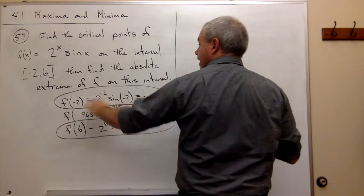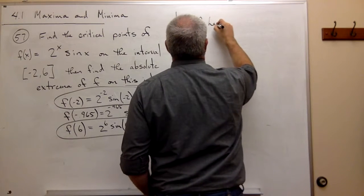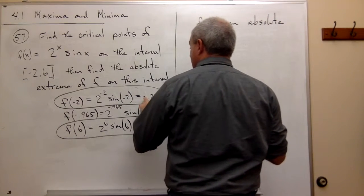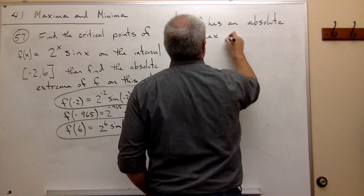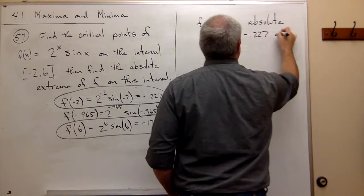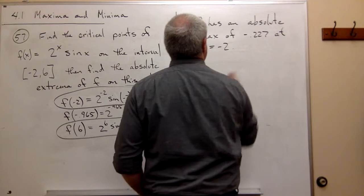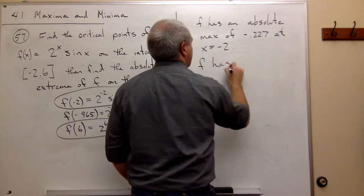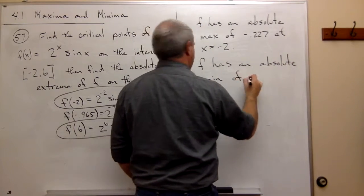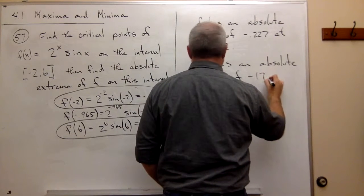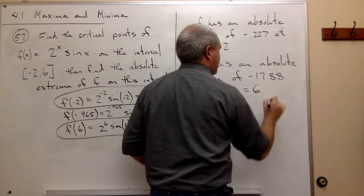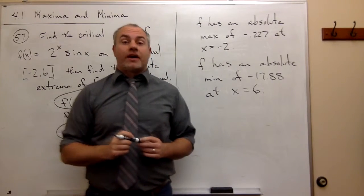So we have that f has an absolute maximum of about negative 0.227 at x is equal to negative 2. And f has an absolute minimum of approximately negative 17.88 at x is equal to 6. And so we've got our absolute maximum, and we've got our absolute minimum.